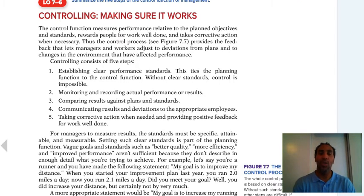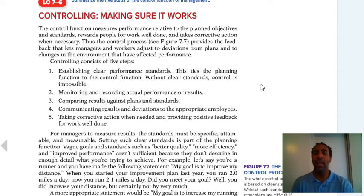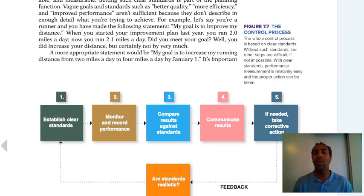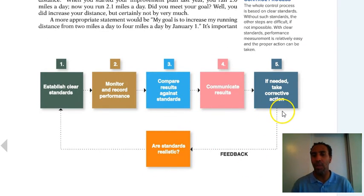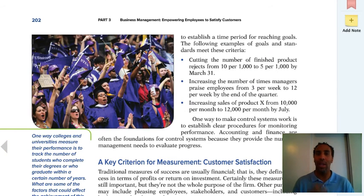Controlling consists of five steps: First, establish clear performance standards. Second, monitor and record actual performance or results. Third, compare results against plans and standards. Fourth, communicate results and deviations to the appropriate employees — if there are deviations, tell people and expect them to fix it. Fifth, take corrective action when needed and provide positive feedback for work well done. Don't just tell people when they do bad — also talk to them when they do good. The control process shows how it flows: if corrective action is needed, take it; if standards aren't realistic, go back and establish new standards, because without realistic standards, employees won't get it done.